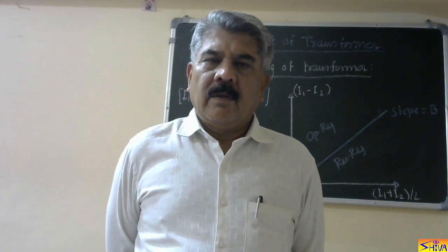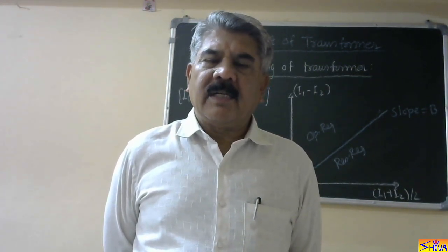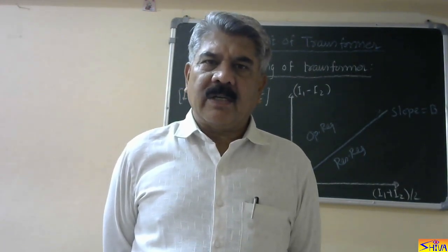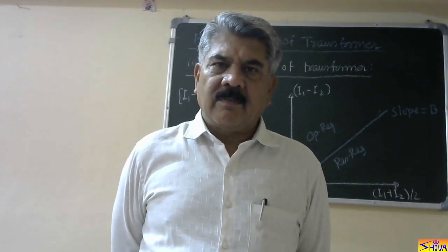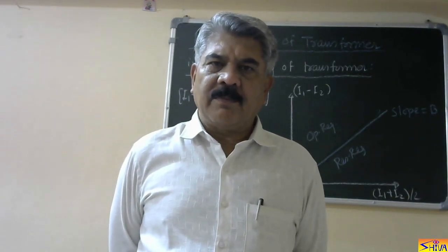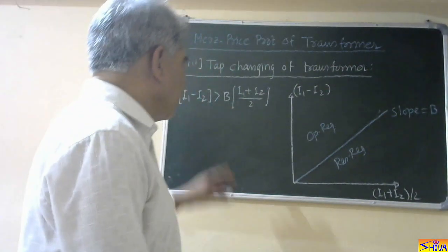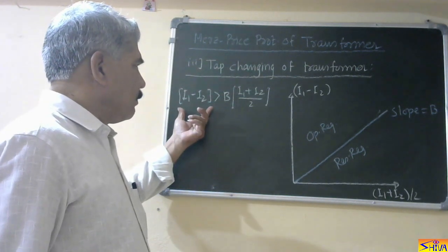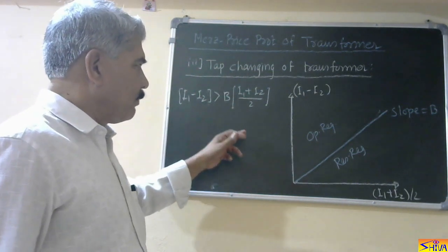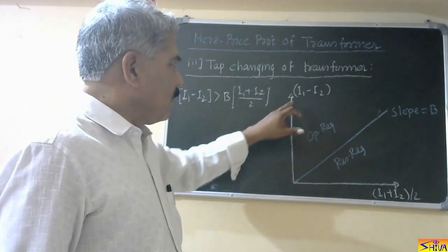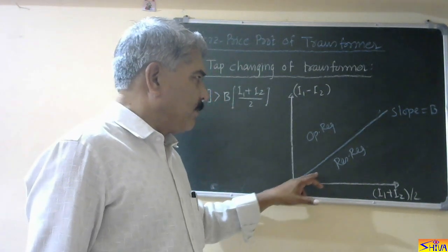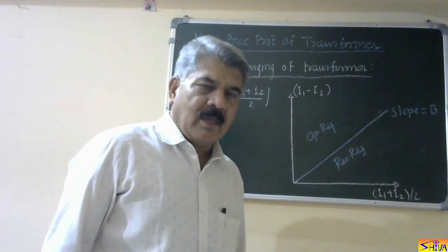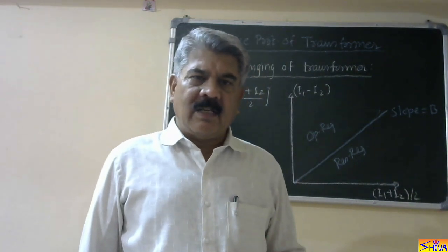Hello friends, good morning. In my previous two lectures I had explained the percentage differential protection, also called bias differential protection or Merz-Price protection of the transformer. This is the main protection for large transformers. The operating condition is: i1 minus i2 should be greater than b times (i1 plus i2) divided by 2. For the characteristic, we take differential current along the y-axis and main circulating current along the x-axis. Below the slope is the restraining region and above it is the operating region.